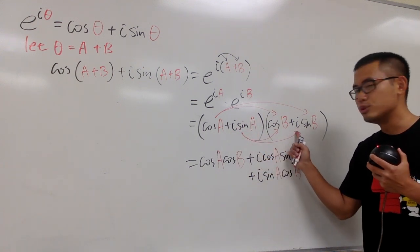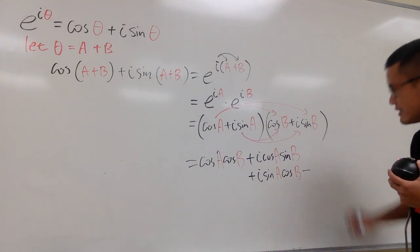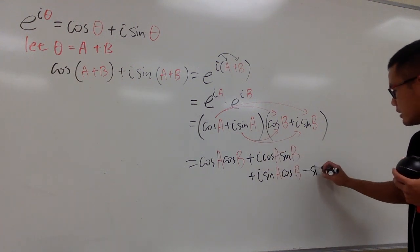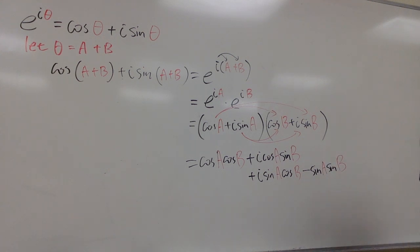And then we'll do this times that. And you see, i times i, which is i squared, which is negative one. So, we'll minus, okay? Sine a times sine b. So, this is just minus sine a, sine b. All right?